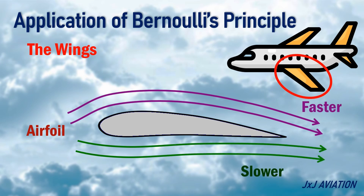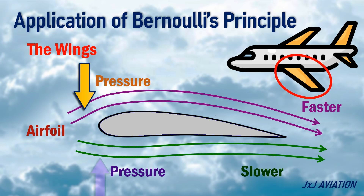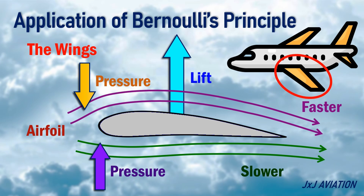On the top surface, the air velocity is more, so the pressure will decrease. Under the bottom surface, the air velocity is less, so the pressure will increase. This pressure difference creates an upward force, or lift force, on the airfoil and the wing.